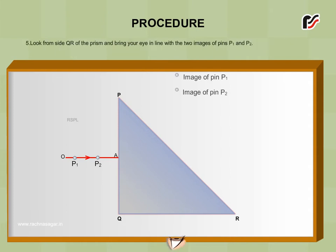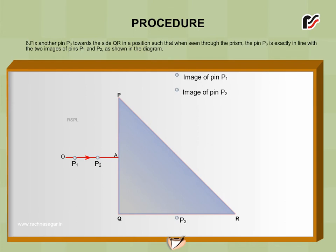Look from side QR of the prism and bring your eye in line with the two images of pins P1 and P2. Fix another pin P3 towards the side QR in a position such that when seen through the prism, the pin P3 is exactly in line with the two images of pins P1 and P2 as shown in the diagram.